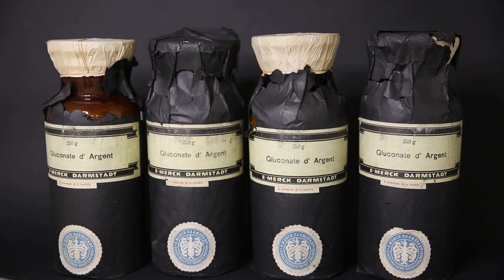For this video, I found some old pharmacy bottles online which contained silver gluconate, a silver salt with gluconic acid. Relative to the silver content, they were pretty cheap, and therefore I wanted to try to get the silver out of them and see if it is possible to make a profit.